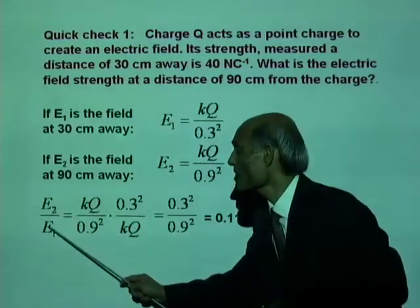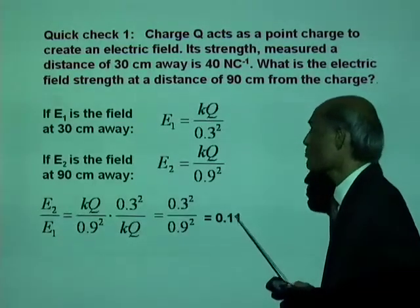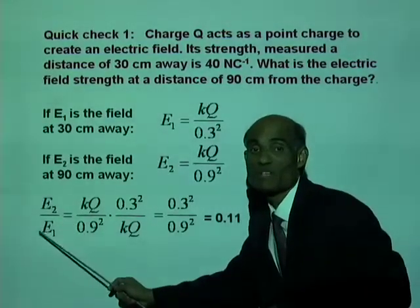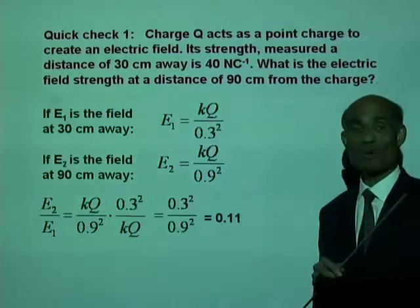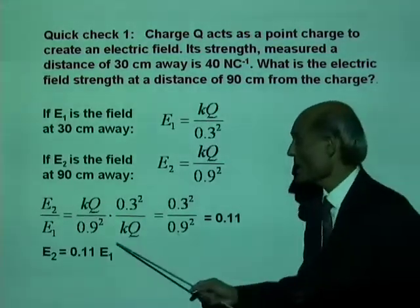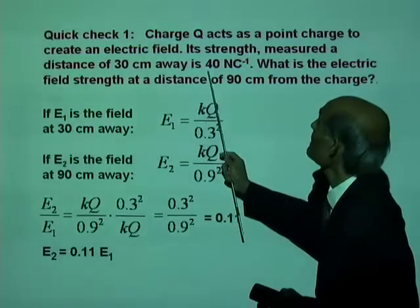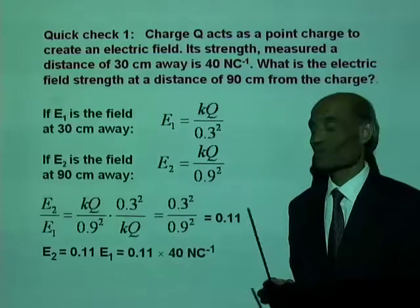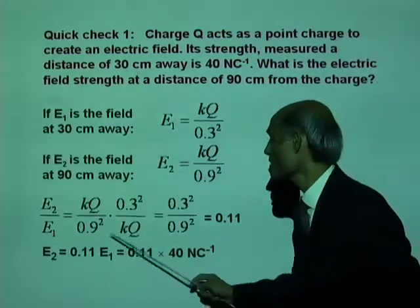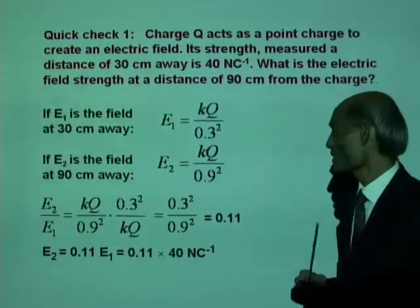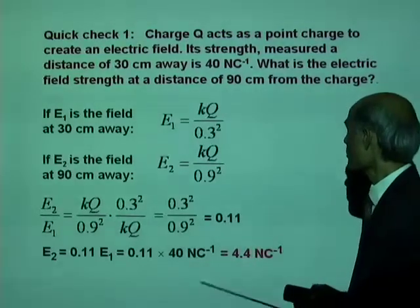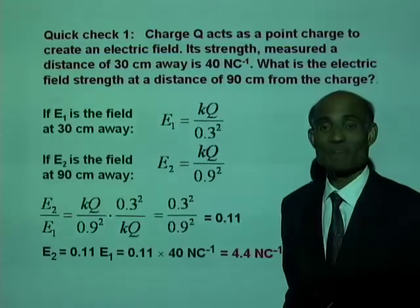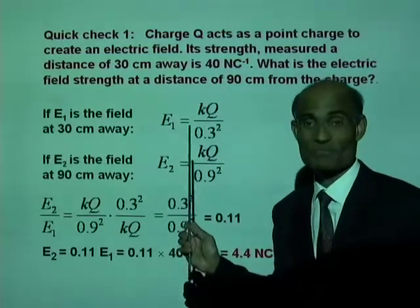If E2 divided by E1 is 0.11, what is E2 equal to? E2 is E1 multiplied by 0.11. There you are. And you know E1. E1 is 40 N per C. So that will be 0.11 times 40 N per C. And that is 4.4 N per C. A very important concept.